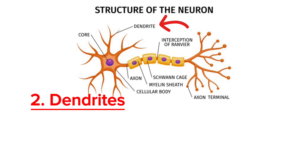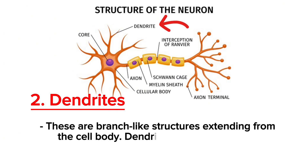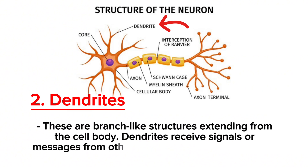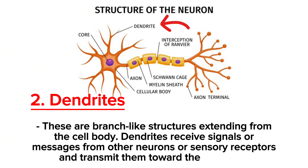Dendrites — you can see them in the diagram — are branch-like structures extending from the cell body. Dendrites receive signals or messages from other neurons or sensory receptors and transmit them towards the cell body.